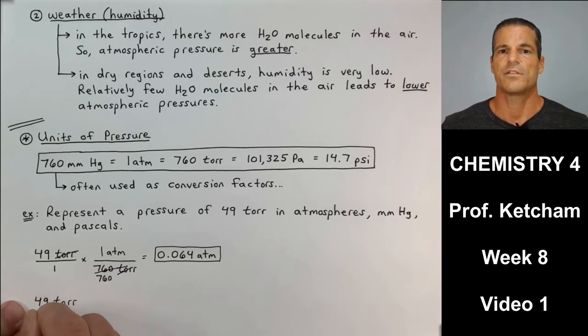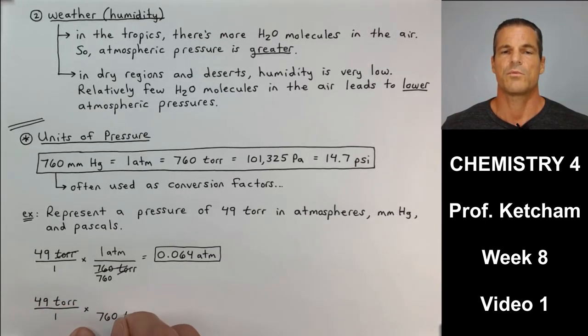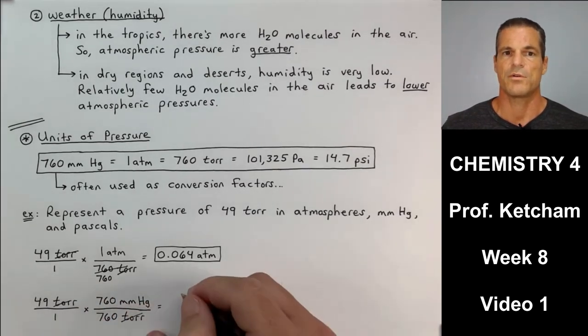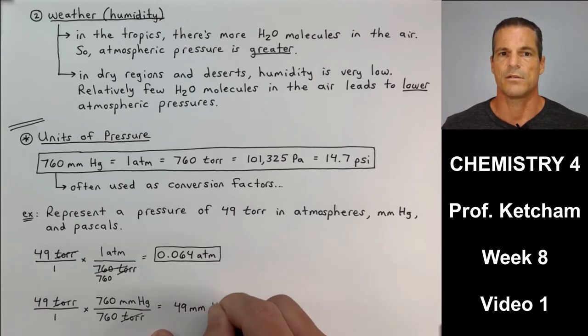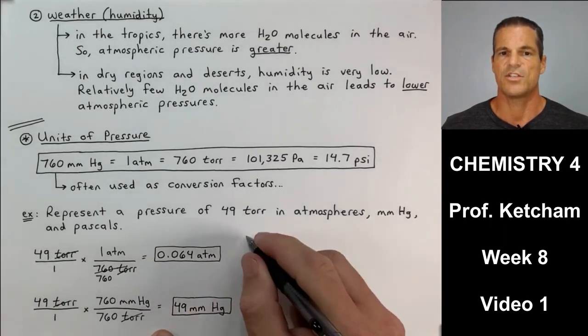Now, let's convert it to millimeters mercury. 49 torr, start with what you're given, put it over one. Well, for every 760 torr, there's 760 millimeters mercury. Let's just rewrite my answer, 49 millimeters Hg.